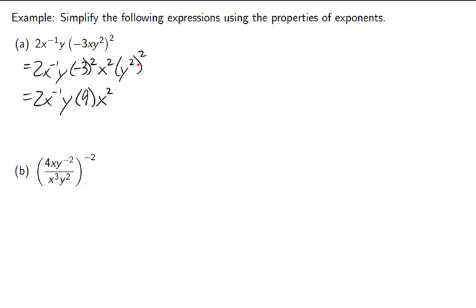x squared stays there, and power to a power means multiply. 2 times 2 is 4. We're getting here. But now, let's take care of the numbers. 2 times 9 is 18. And now I can add some exponents.